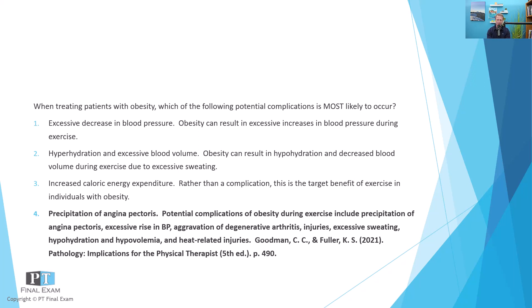Looking at the incorrect answer options: the first incorrect one is excessive decrease in blood pressure. Rather, it should read an excessive increase in blood pressure. That's the sympathetic nervous system — the stress that the patient is undergoing will be more profound and pronounced, resulting in the likelihood of excessive increased blood pressure.